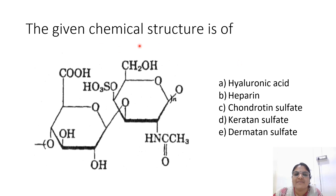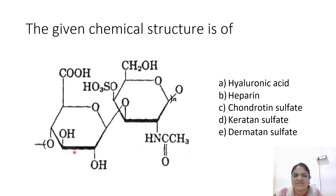So the given chemical structure is solved. What is the answer? This is N-acetylgalactosamine and this is D-glucuronic acid. So it is chondroitin sulfate.